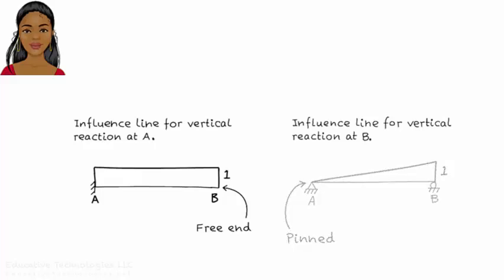So, as we push the right end of the beam up, the left end stays in place, but rotates, causing the beam to form an inclined line.